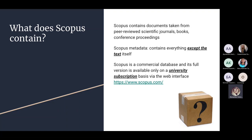Scopus is a commercial database, which means that Kyiv Mohyla Academy and other universities worldwide need to pay a fee every year to subscribe. Today Kyiv Mohyla Academy has subscribed to both citation databases — Scopus and Web of Science — so you can access them on campus or remotely. Access is available via the web interface at www.scopus.com.